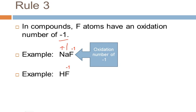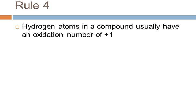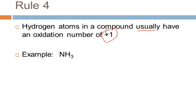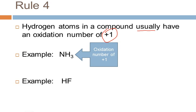Rule number four deals with hydrogen. Hydrogen atoms in a compound usually, but not always, have an oxidation number of plus one. For example, in NH3, commonly known as ammonia, there are three hydrogen atoms and each one has an oxidation number of plus one. Going back to our HF molecule, the fluorine has an oxidation number of minus one, and the hydrogen has an oxidation number of plus one. You just know the rules, apply them, and write those oxidation numbers above the formula.